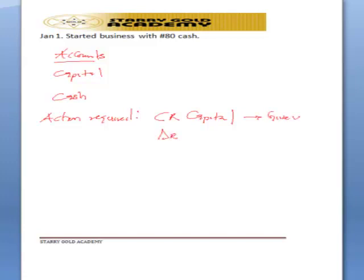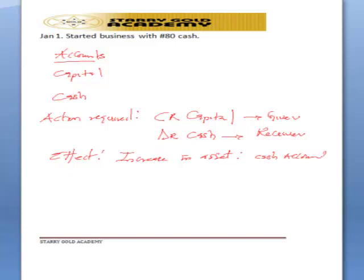And debit cash, which is the receiver. The effect of this: cash is an asset, so a debit entry in an asset means there is an increase in assets — specifically the cash account. Capital is a liability, so a credit entry means there is an increase in liabilities — specifically the capital account. That is the action to be taken and the effect of this transaction.